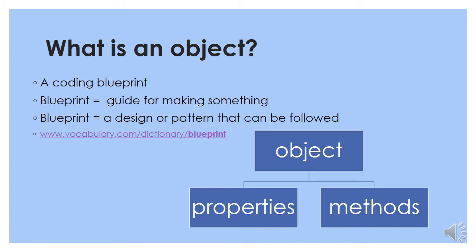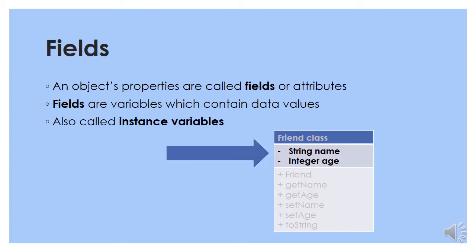Let's first talk about what is an object. You will write classes or programs which do not have a main method, and these are blueprints. Blueprints are a guide for making something, a design or pattern that can be followed. That's what an object is — it's a blueprint for making more copies of the object. Objects have got fields and methods. The properties of an object are called its fields or attributes, and fields are just variables that contain data values. They're also called instance variables.